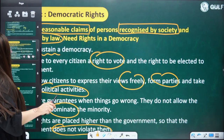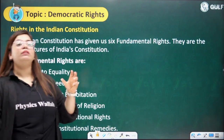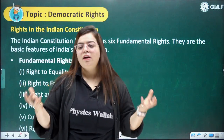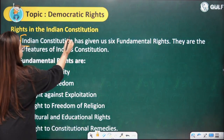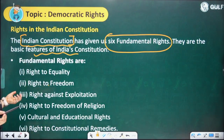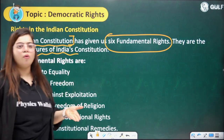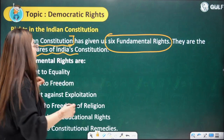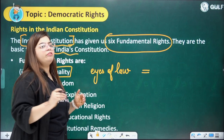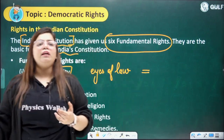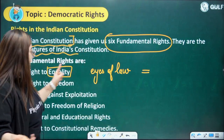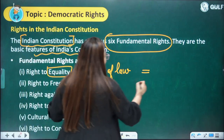Now we come to fundamental rights. These are the basic rights which form the foundation of the entire democratic country. The Indian Constitution has given six fundamental rights — these are the basic features of India's constitution. The first is Right to Equality, which means everyone is equal in the eyes of law — be it a prime minister or a normal citizen — with gender equality and political equality given to all.